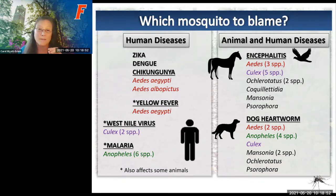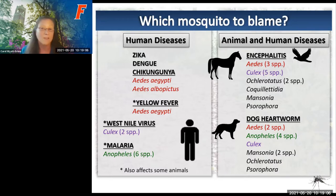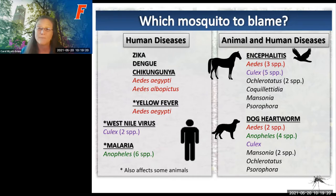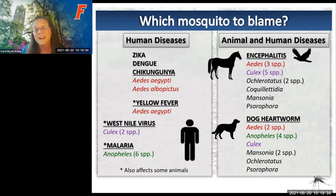Dog heartworm is a parasitic nematode carried by multiple species of mosquitoes. It's a very painful and debilitating disease. Female heartworms get up to 14 inches in length, and males get to about 7 inches. Keeping your dog on preventive medication is extremely important here in Florida. Even if your dog is an indoor dog, they go outside to use the bathroom and for walks. If your dog gets heartworm, the cost of treatment—both financially and emotionally—is very high. So please get your dogs on heartworm prevention.